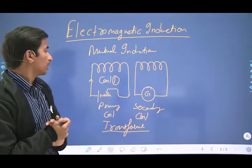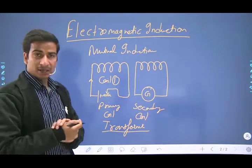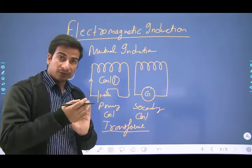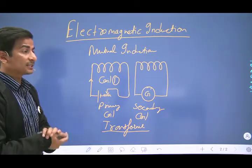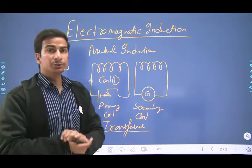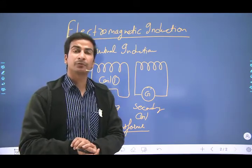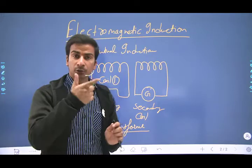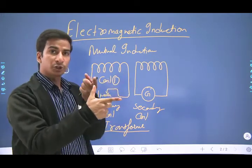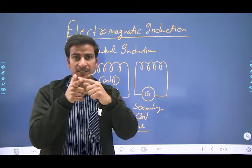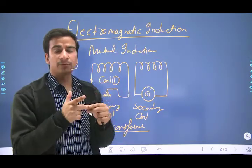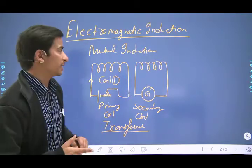So this is all for today's class — aur iske baare mein humne kaafi detail mein samjhaya hai. We have covered Fleming's Right Hand Rule, which is necessary in order to find the direction of induced current. Induced current ki direction ko pata karne ke liye hamesha Fleming's Right Hand Rule chahiye — according to which, if the thumb represents the direction of motion of the conductor and the first finger represents the direction of magnetic field, then the middle finger of the right hand represents the direction of induced current.